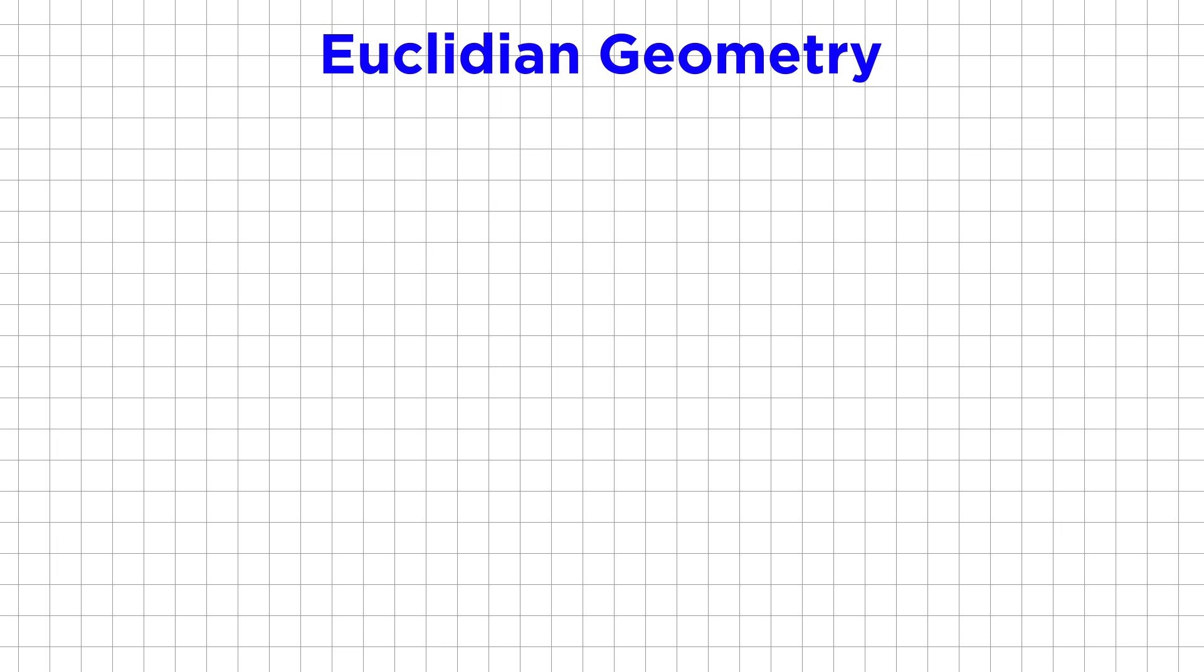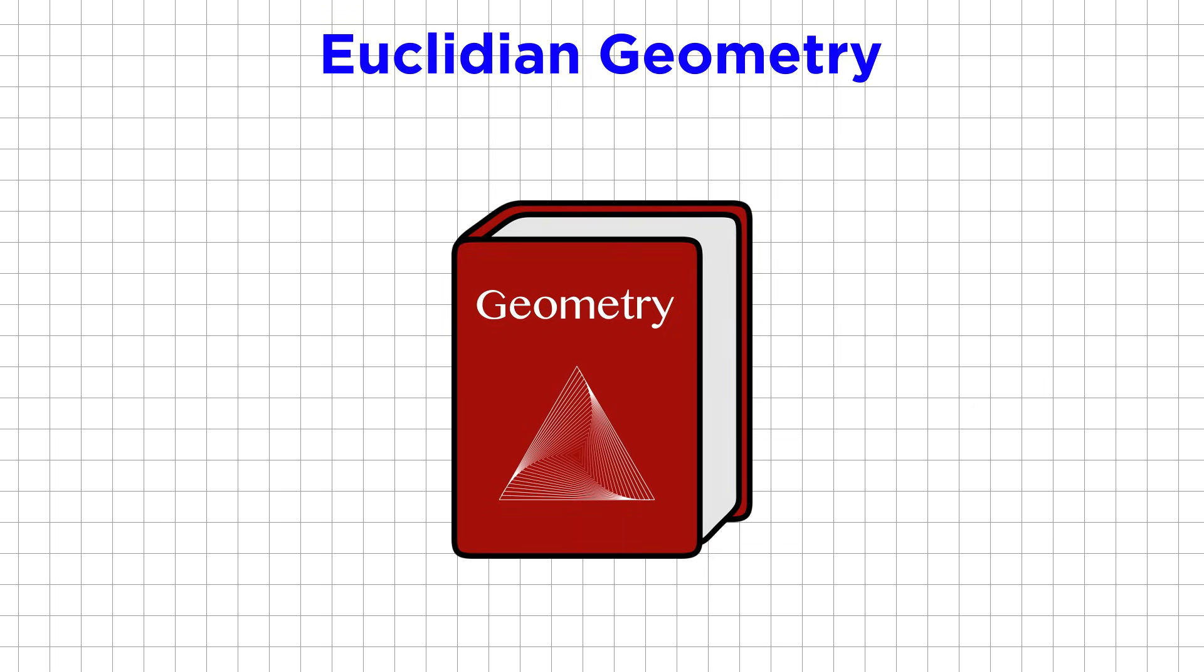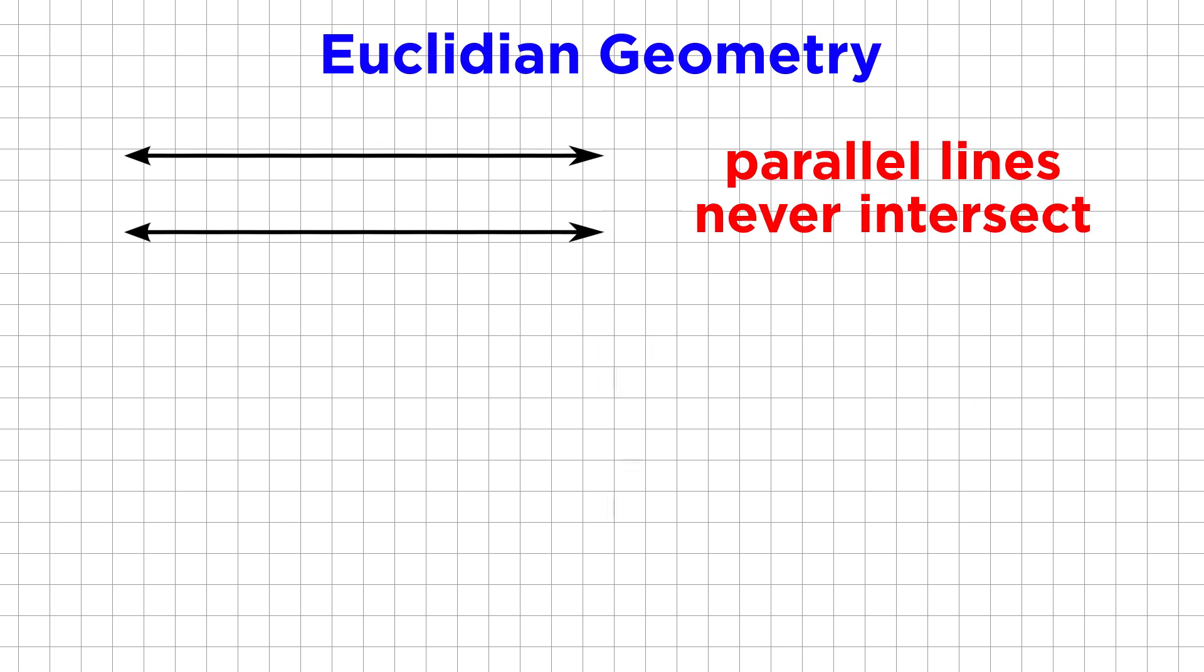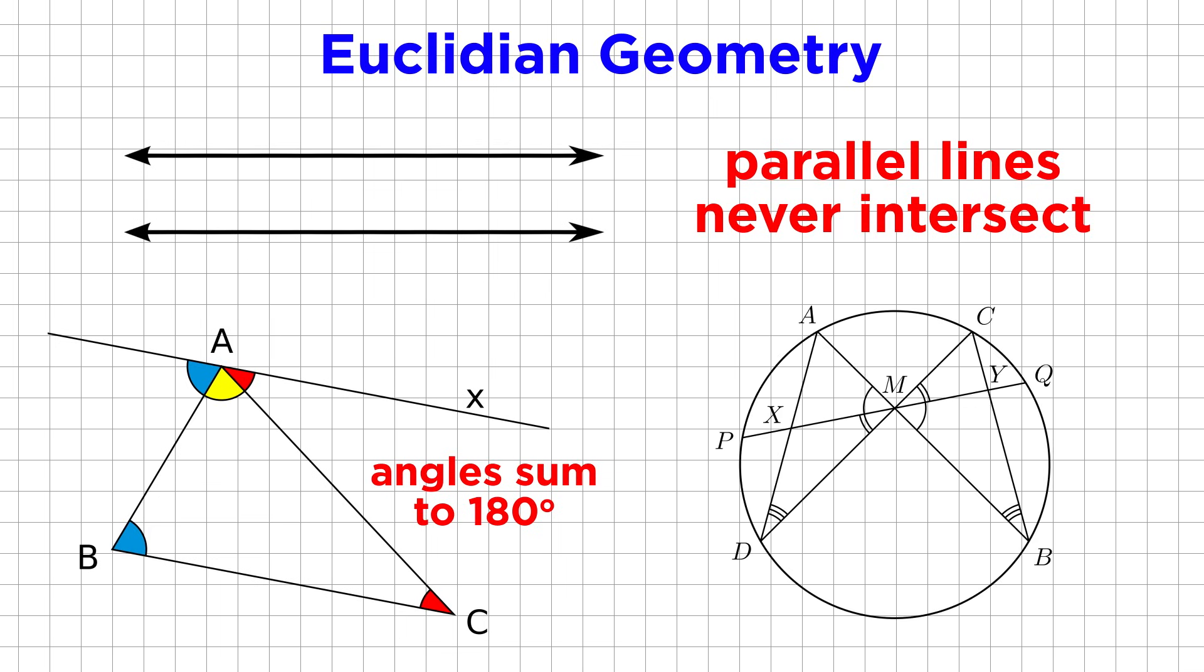For centuries, we thought that the universe obeyed Euclidean geometry. This is the kind from high school geometry class, where parallel lines never intersect, the angles of a triangle add up to 180 degrees, and all kinds of other geometrical perfections hold true.